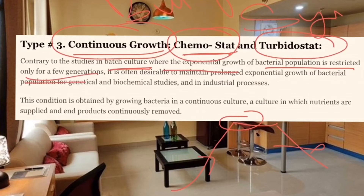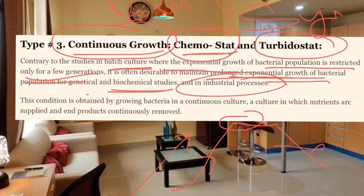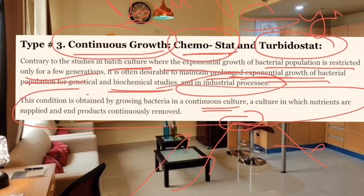It is often desirable to maintain prolonged exponential growth. To maintain bacterial culture and population, chemical study is also needed. We will continuously change the cultures so that waste and secondary products do not accumulate, preventing bacterial cells from reaching the death phase. This is the purpose of continuous growth culture.